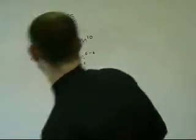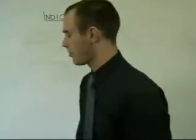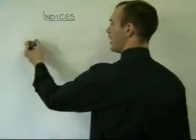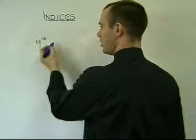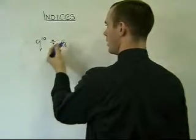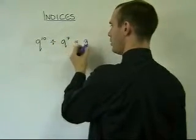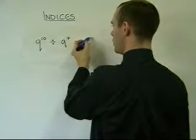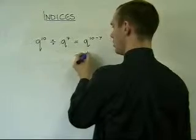Try another example. If we have q to the power of 10 and we divide this by q to the power of 7, the answer will be q to the power of 10 minus 7, or q to the 3.